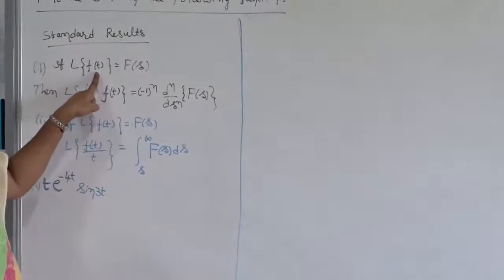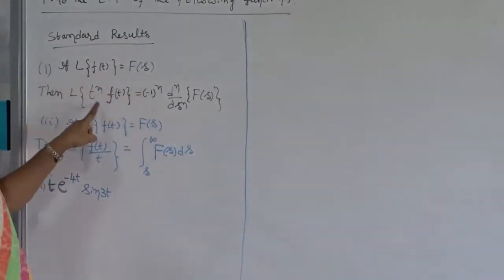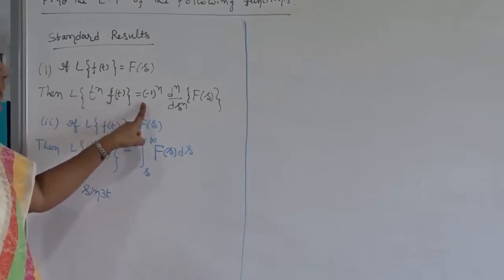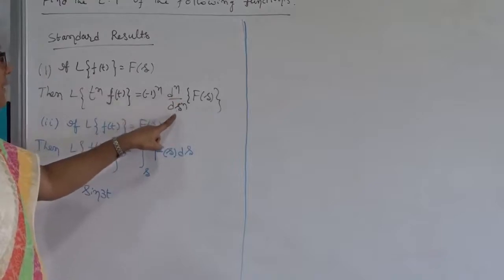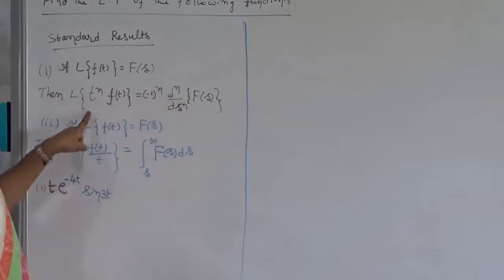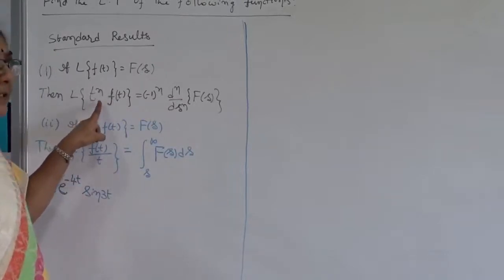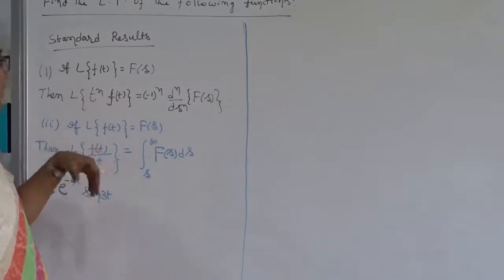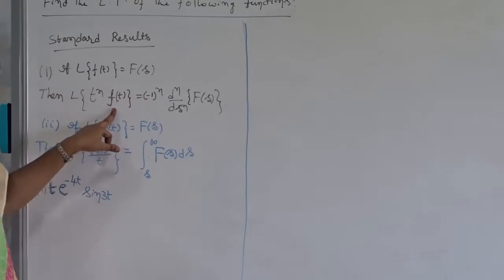If the Laplace Transform of f(t) is capital F(s), then the Laplace Transform of t to the power n into f(t) is nothing but (-1) to the power of n, times the nth derivative of capital F(s) with respect to s. This formula is very useful whenever we have a product of t, or t-squared, t-cubed into any function — maybe exponential, trigonometric, whatever it may be.